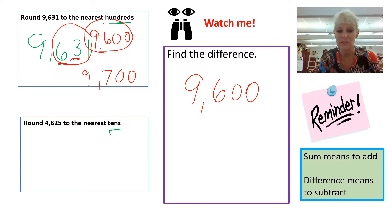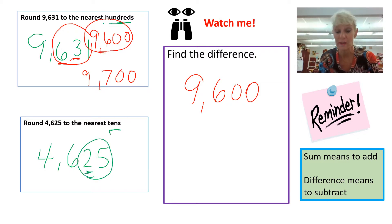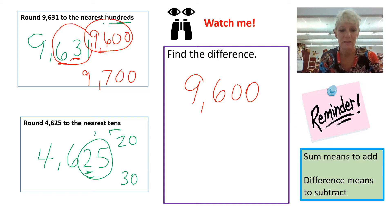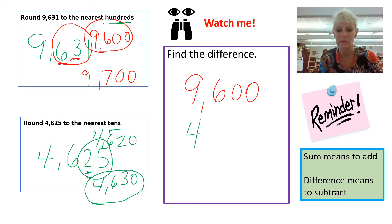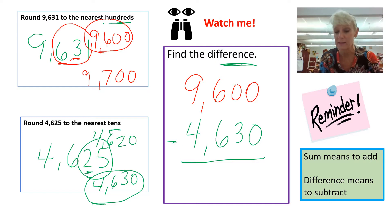The next one says to round to the nearest tens. I have 4,625, so I want to concentrate on that part of my number and ask: am I going to be closer to 20 or closer to 30? I can't forget all the good stuff that goes with it, so I have 4,620 or 4,630. The five tells me to bump up, which means I'm going to round to 4,630. This tells me I need to find the difference, so I'm going to subtract.